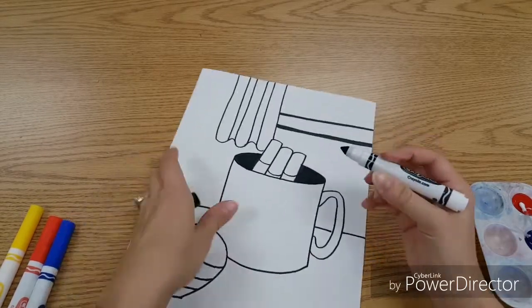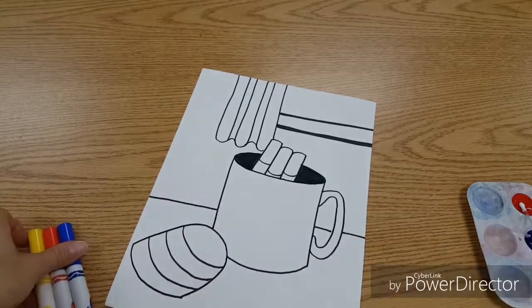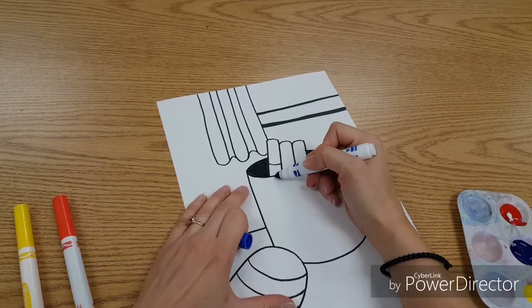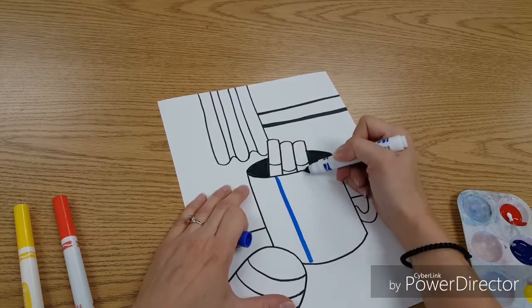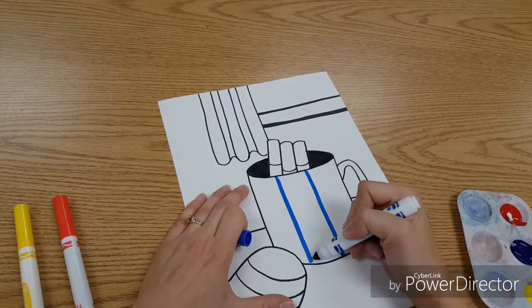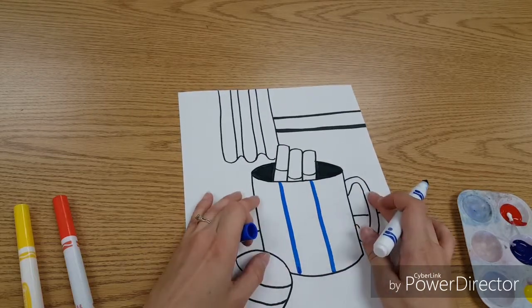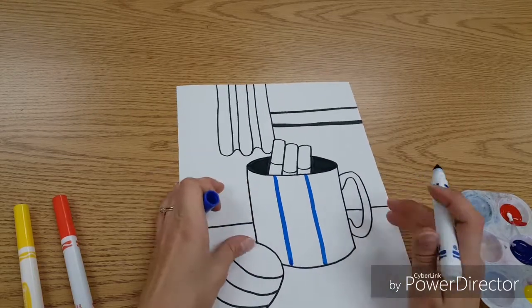Then, on the outside, I would pick a color. I'll go with blue. What I'm going to do is draw what's called a hot spot. This section will stay white, the rest will get colored, and this will make the cup look round.